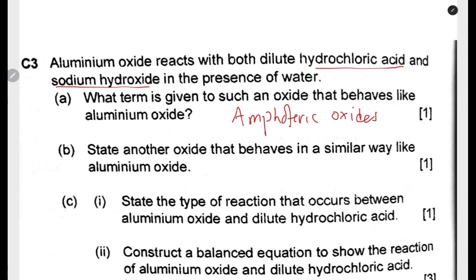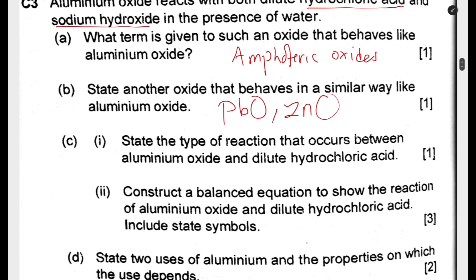State another oxide that behaves in a similar way to aluminium oxide — in other words, give another example of an amphoteric oxide. We have PbO (lead(II) oxide) and zinc oxide. State the type of reaction that occurs between aluminium oxide and dilute hydrochloric acid. Since aluminium oxide is behaving as a base and HCl is an acid, this is an acid-base reaction, called a neutralization reaction.